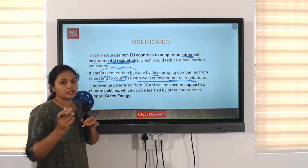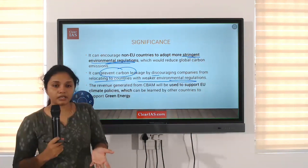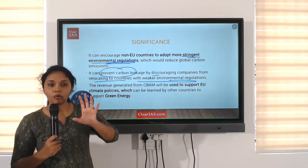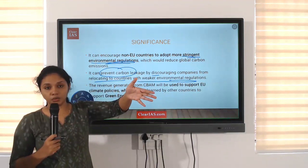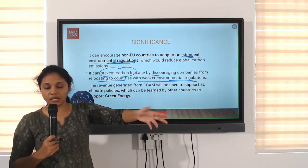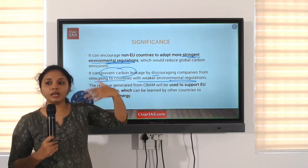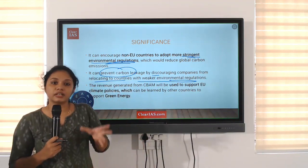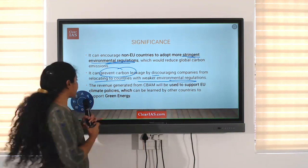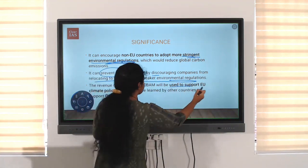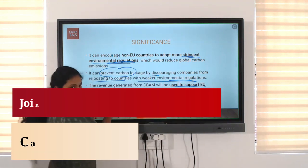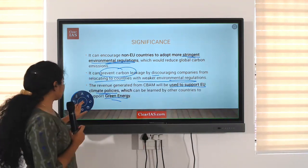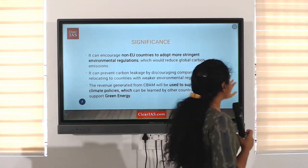In countries with weaker environmental regulations, companies tend to produce more carbon-intensive products. But ultimately, if they need to export to an EU country, they will have to pay more taxes based on the carbon content. This discourages companies from producing carbon-intensive products. Also, revenue generated from CBAM will be used to support EU climate policies, which can be an example for other countries supporting green energy.